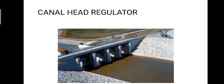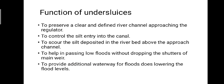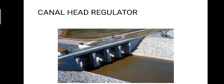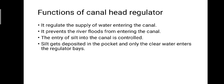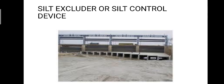The next important component is the canal head regulator. A structure constructed at the head of the canal to regulate the flow of water is known as a canal head regulator. Its functions are to control the water supply entering the canal, to prevent river floods from entering the canal, and to control the entry of silt — silt gets deposited in the pocket and only clear water enters into the regulator base.